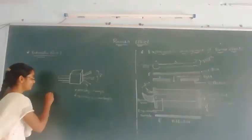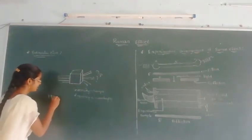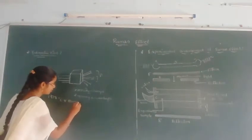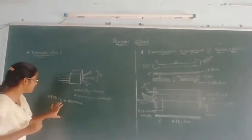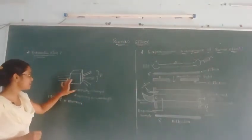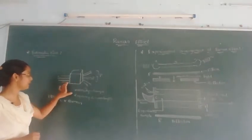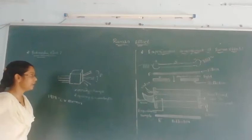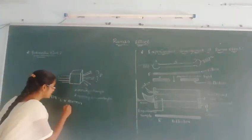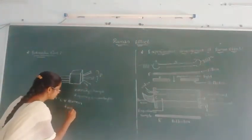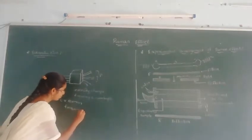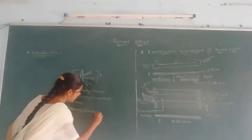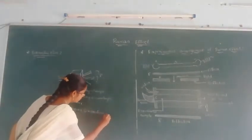So, in 1928, C.V. Raman observed that when light is incident on a liquid substance and the light is scattered in different directions, in those different directions the scattered light's frequency and wavelength are changed.